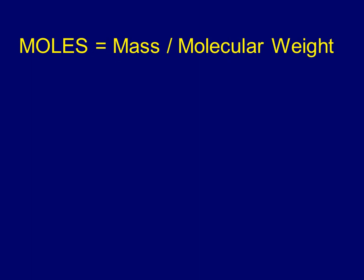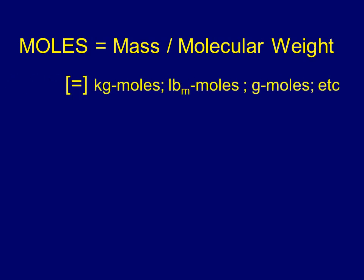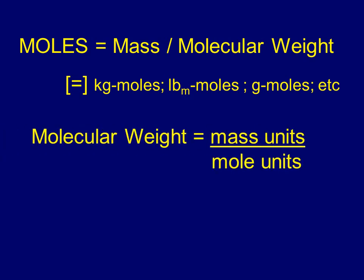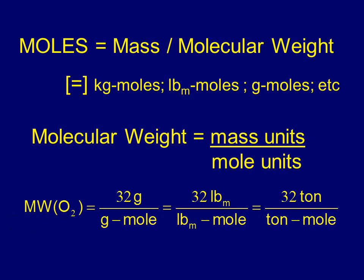Energy and volume respond in a physical sense more to moles than mass. Using the ideal gas equation, a mole of oxygen at similar conditions to nitrogen will take up the same space although the mass will be different. A mole is the mass divided by the molecular weight of the substance. The molecular weight is the mass units over the mole units — so the molecular weight of oxygen is 32 grams per gram-mole. A pound-mole of oxygen would have a mass of 32 pounds; a ton-mole of oxygen would have a mass of 32 tons.